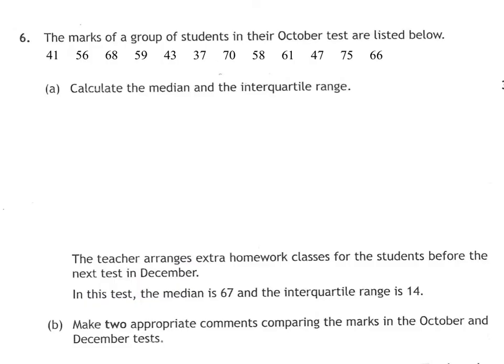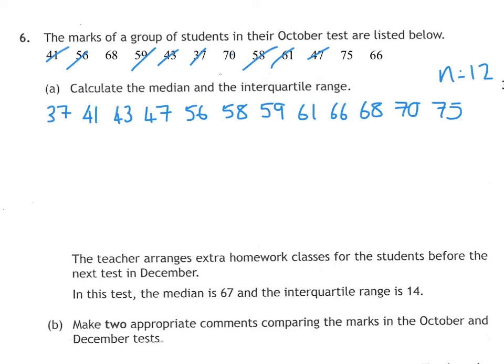Question 6, we have a group of numbers. We want to calculate the median and interquartile range, so I'm going to write these in order. That's the numbers in order, and I've got 12. 12 numbers split into half gives you 6 and 6. There's my middle, that's my Q2. Split that again, there's my Q1. Split that again, that gives me my Q3.